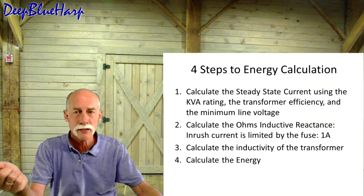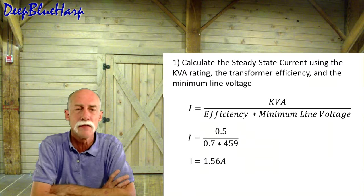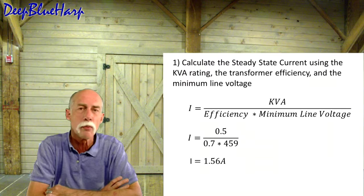Four steps. We need to calculate KVA, the ohms inductive reactance, to calculate the inductivity of the transformer, and then calculate the energy. So first of all, calculate steady state current using the KVA rating. It's KVA over the efficiency times the minimum line voltage. And in this case, it's 1.5 amps.